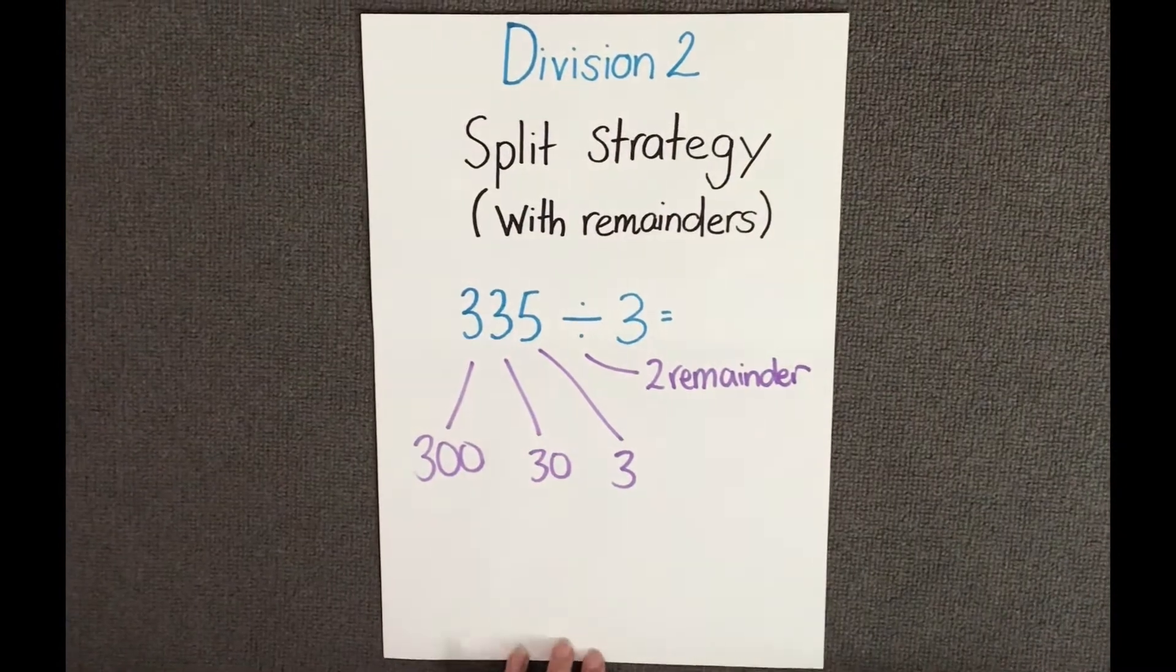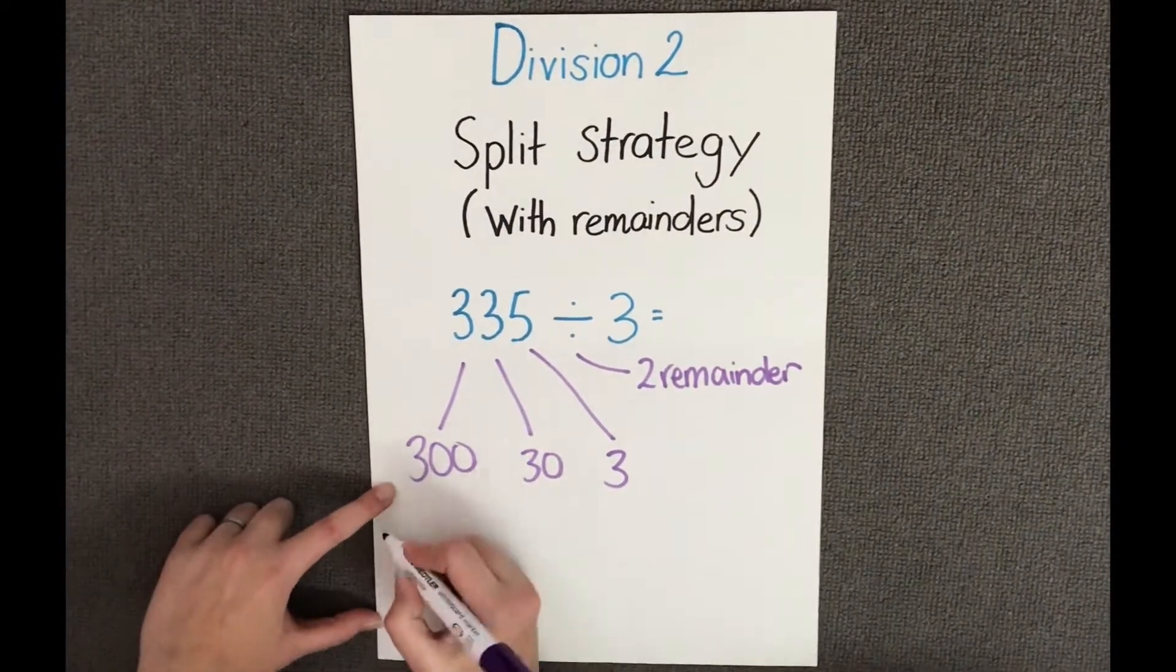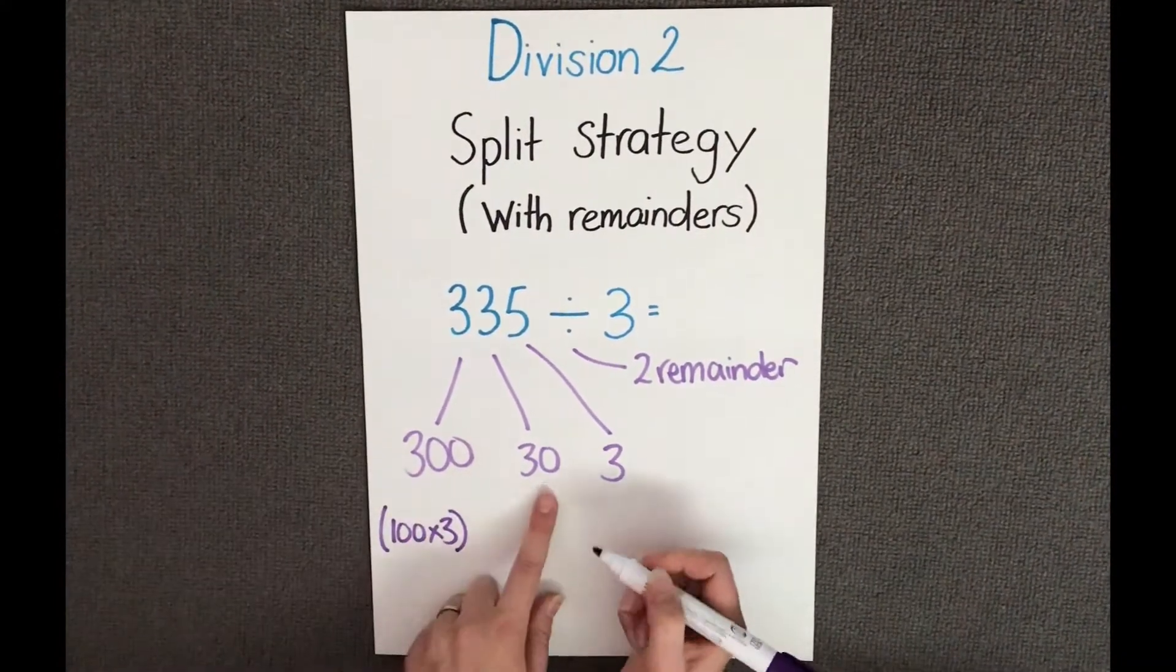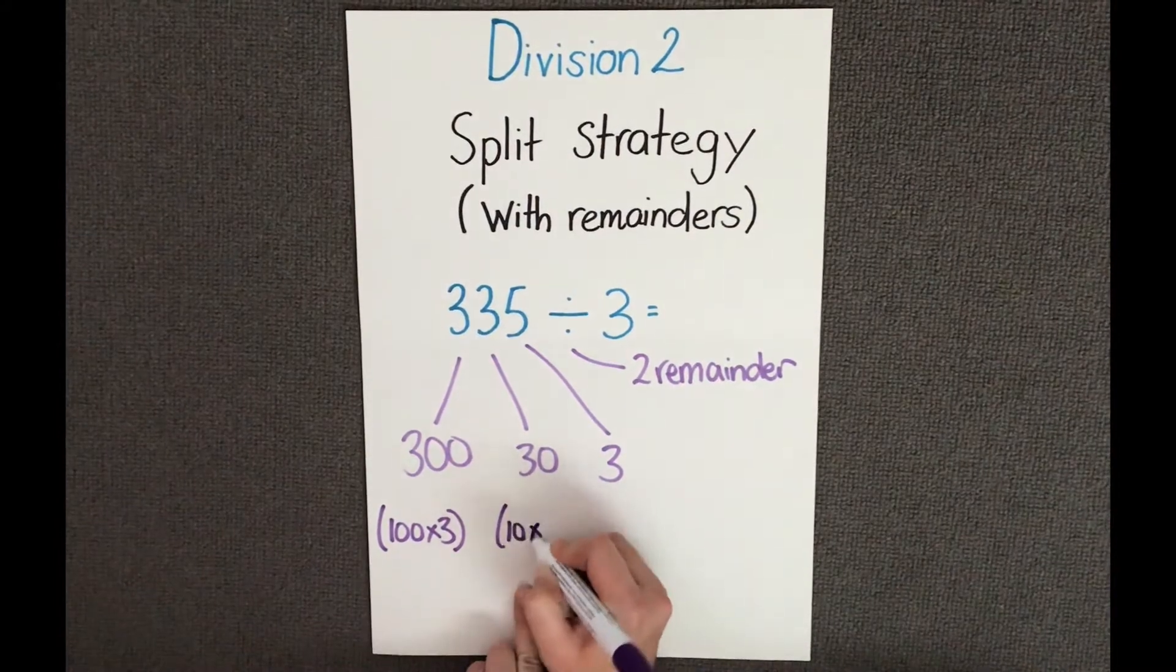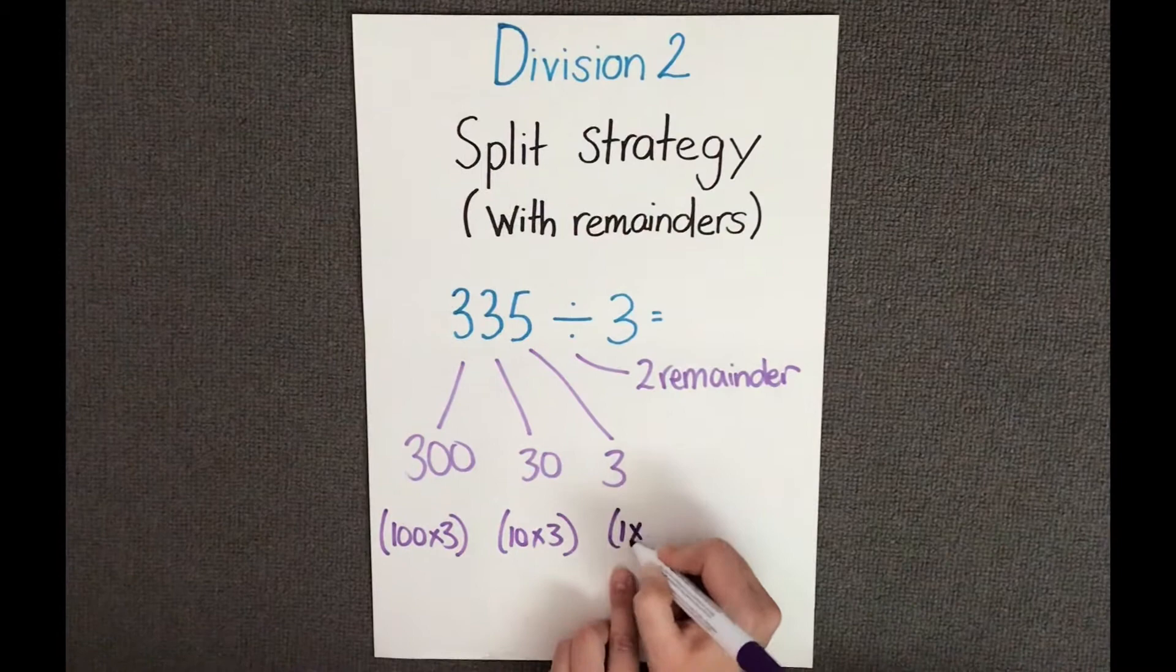Now let's try showing our value for each of these. So with 300, I know that to get 300, I do 100 times by 3. I know to get 30, I'm going to do 10 times by 3. And I know to get 3, I'm going to do 1 times by 3.